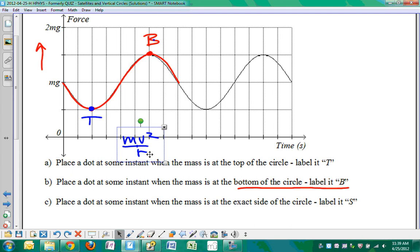So B at the bottom is the greatest, and T at the top over here is the lesser force, or the minimum force.